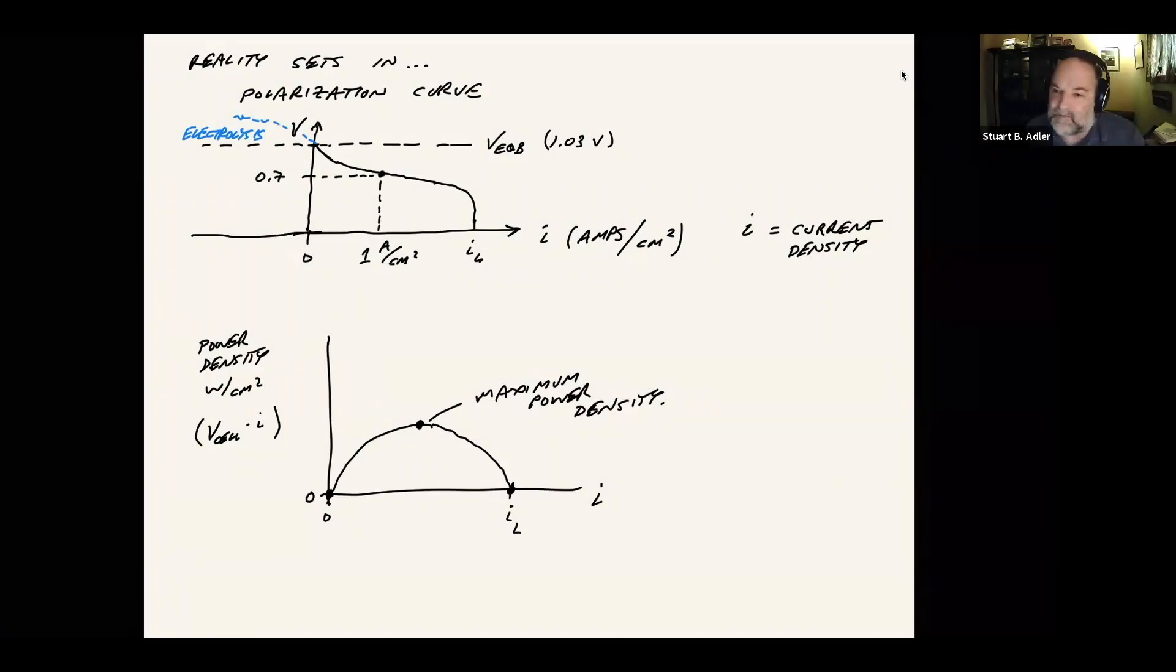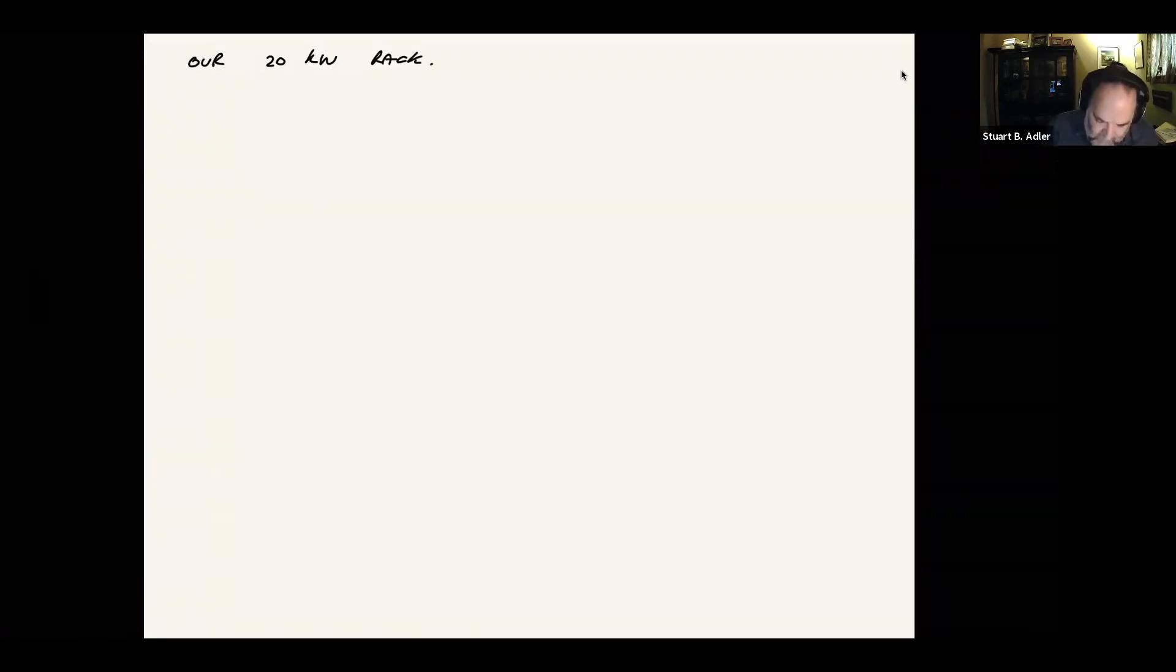Let's apply this to our rack and see what some of the implications are for operating at lower voltages. So going back to our 20 kilowatt rack, we're saying V cell is now going to be lower. So let's say we take V cell to be something typical like 0.7 volts.